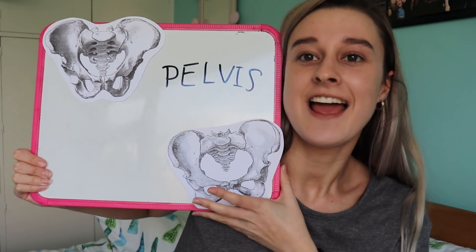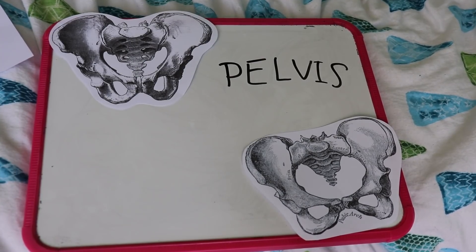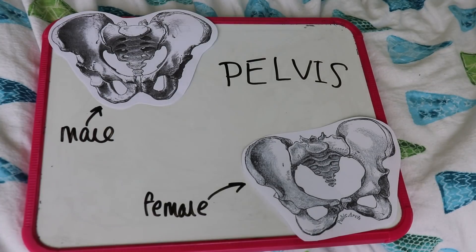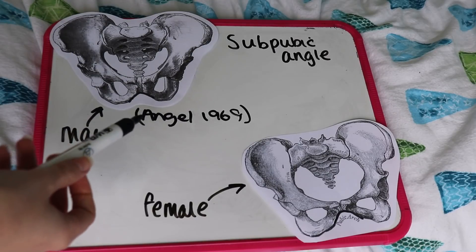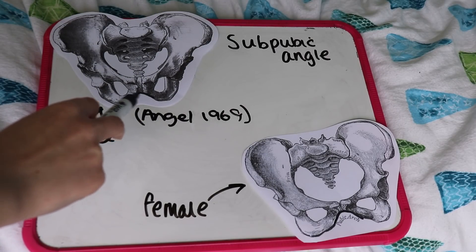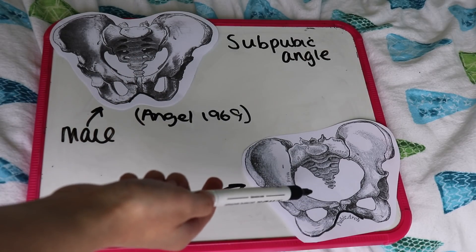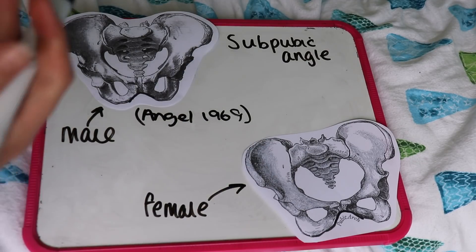We are now going to move on to the pelvis, doing sexing and then ageing. The pelvis is by far the most useful bone in the body for building a biological profile of a person, because of very pronounced differences in sex and also pronounced differences that happen to the bone as you get older. The pelvis on the top left of the screen is male and the pelvis on the bottom right is female. The main features we are looking at are the sub-pubic angle or pubic arch. According to Angel 1969, the male sub-pubic angle is deeper and more narrow, whereas the female is wide and shallow — all to do with childbirth and how the pelvis opens up to let the baby pass through.